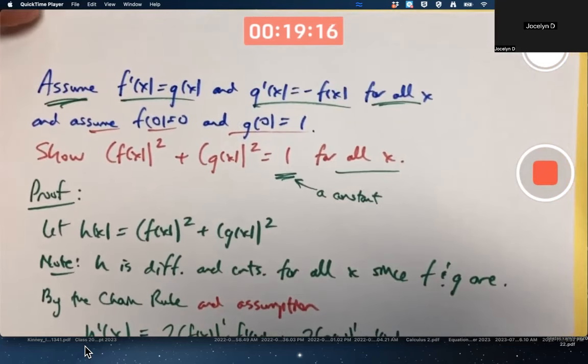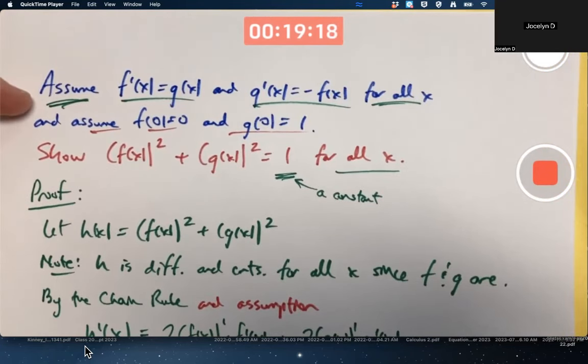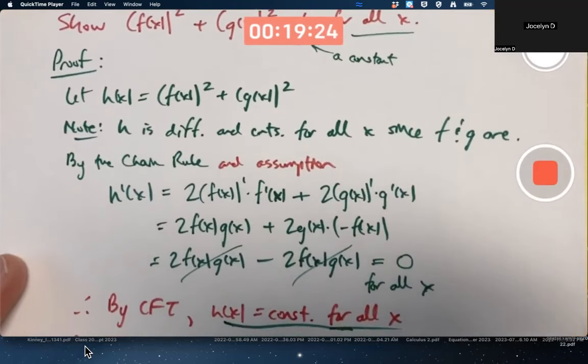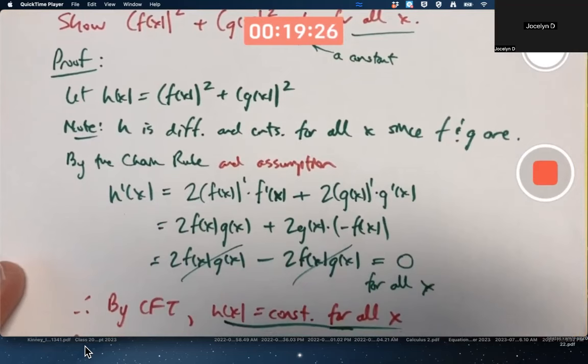It does imply, it is essentially the case that these assumptions imply f of x does equal sine of x and g of x does equal cosine of x, though this thing that I just proved is not really a proof of that fact. That requires what's called existence and uniqueness theory of differential equations, but we're not doing that.